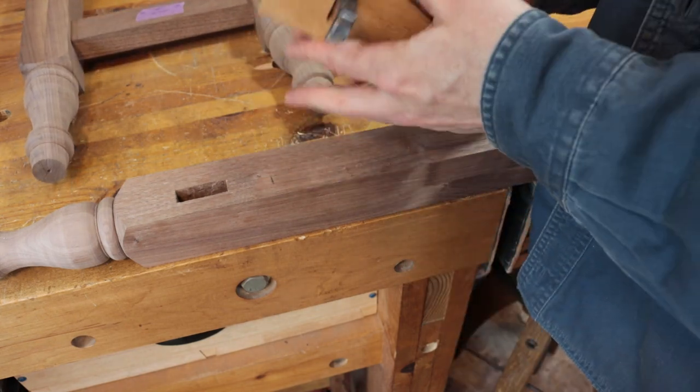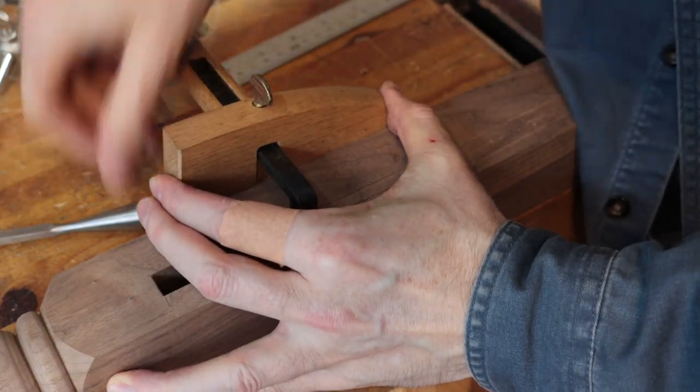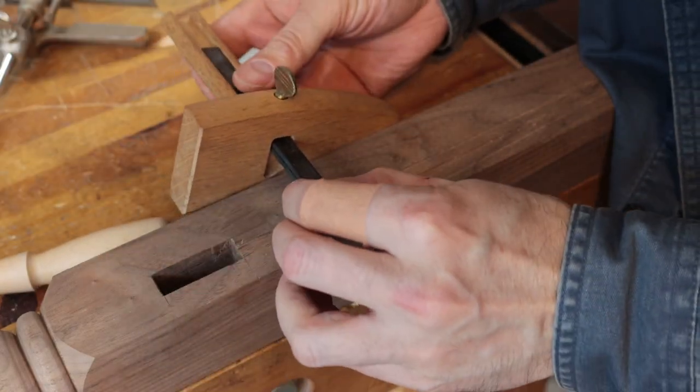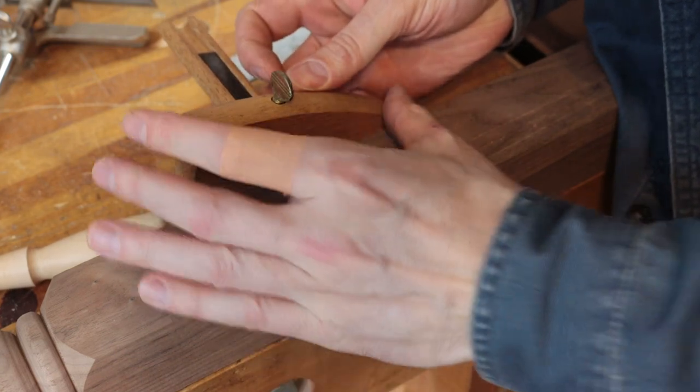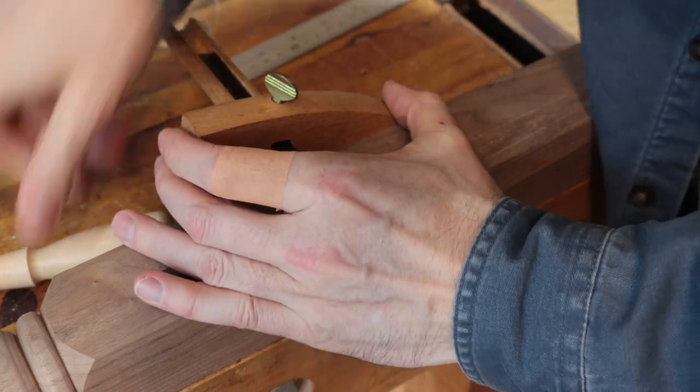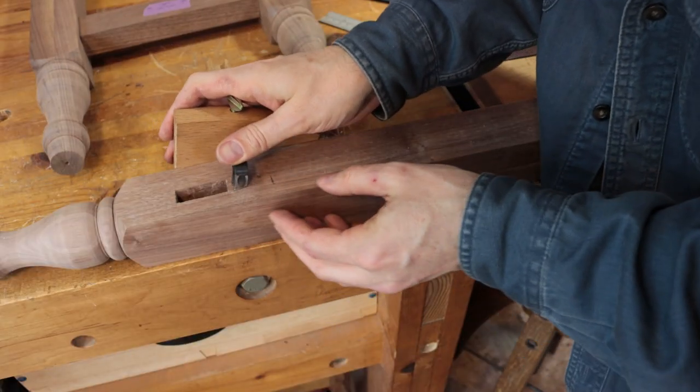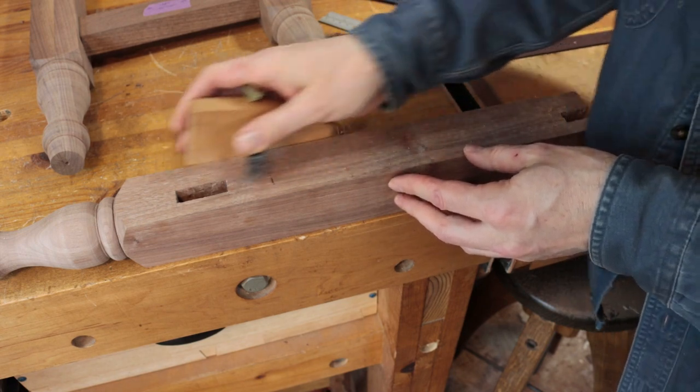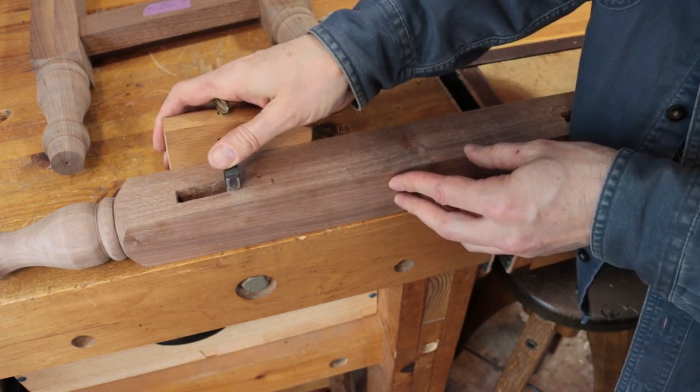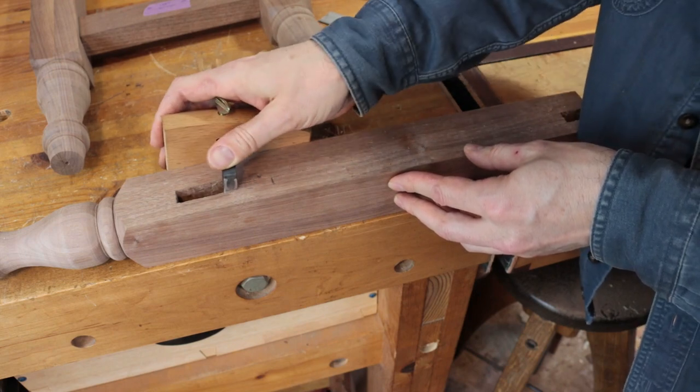Now I'm going to take a Japanese knife gauge like this - it has two knives. I'm going to set it to the width of those lines that I just scribed with the combination plane. This is all just to make it deeper. I'm going to take that and then I'm going to draw back again so I can really cut down into this part down here.